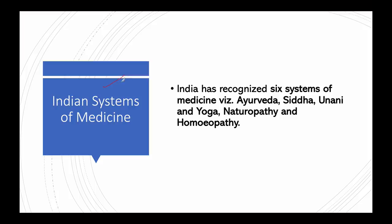Now we'll discuss what these Indian systems of medicine are. India has recognized six systems of medicines: Ayurveda, Siddha, Unani, Yoga, Naturopathy, and Homeopathy. The Ministry of AYUSH — which stands for Ayurveda, Yoga, Naturopathy, Unani, Siddha, and Homeopathy — was formed on 9th November 2014.